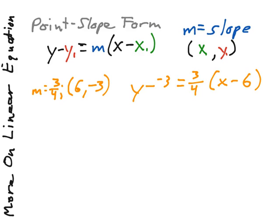Now we simplify this expression, or this equation, so we have y, we subtract the negative, the same as adding. So it's y + 3 = 3/4(x - 6), and we now have an equation written in point-slope form.